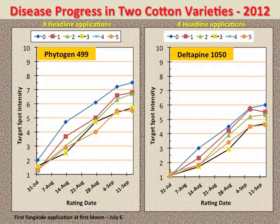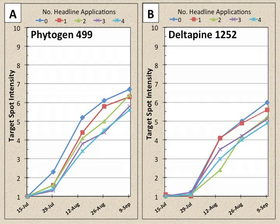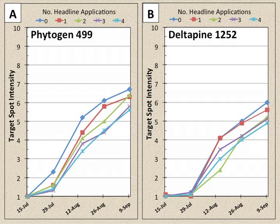Note that up to five applications of Headline 2.09SC at 9 fluid ounces per acre slowed but failed to stop disease development on both cotton varieties. Data from 2013 for Phytogen-499 and DPL-1252 cotton varieties again illustrate the same pattern of rapid disease development from mid-July through early September, particularly on Phytogen-499. In 2013, final defoliation levels on the non-fungicide-treated cotton reached nearly 75% on Phytogen-499 and 50% on DPL-1252. Again, the fungicide Headline 2.09SC slowed but did not stop target spot development.